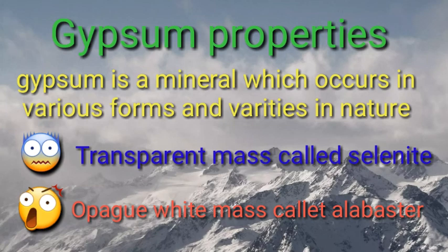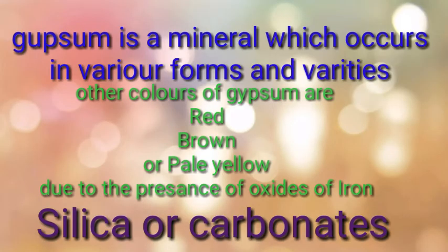Gypsum properties: gypsum is a mineral which occurs in various forms and varieties in nature. We use gypsum in many applications in dentistry. Its forms include: number one, a transparent variety called selenite; number two, an opaque white variety called alabaster. Other colors of gypsum include red, brown, or pale yellow, due to the presence of oxides of iron, silica, or carbonates.